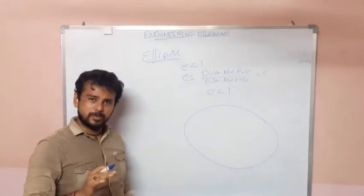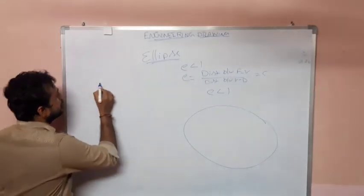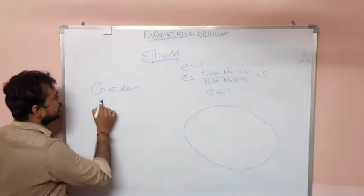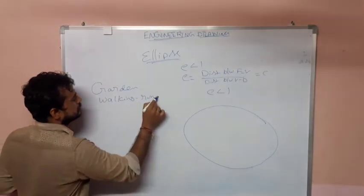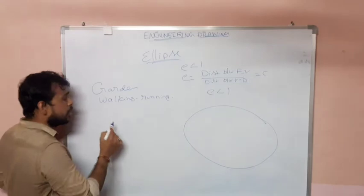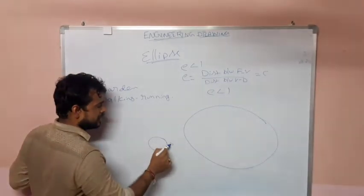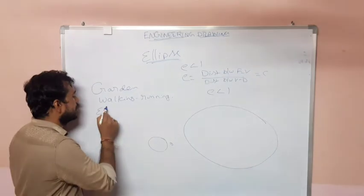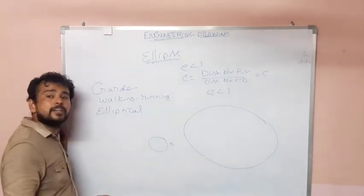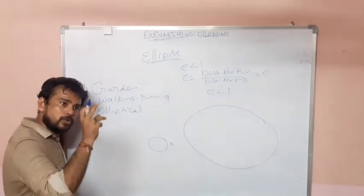This elliptical shape has practical applications. For example, a civil engineer drawing a garden uses elliptical shapes. Also, when satellites move in orbit, the orbit is in an elliptical shape. Mechanical parts also move in an elliptical shape. So when we do an analysis of satellites or orbits or asteroids, we deal with elliptical sections.